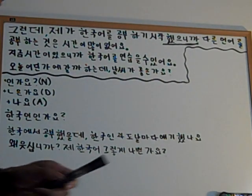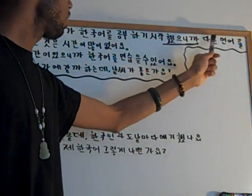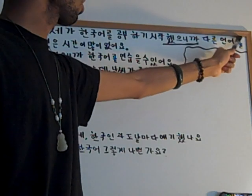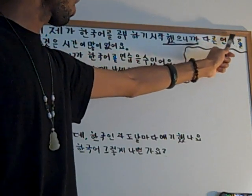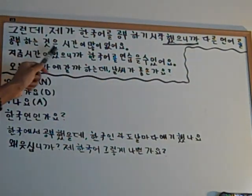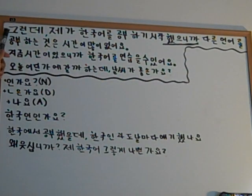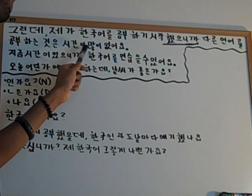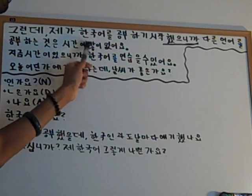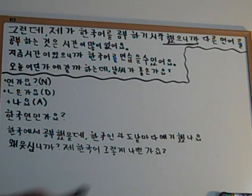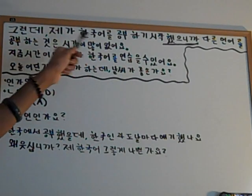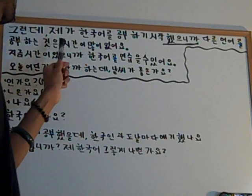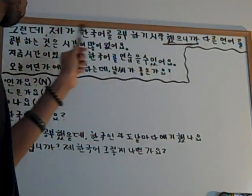So let's start: 다른 is 'other.' 다른 언어 — other languages. 를 is an object marker, marks the object, so 언어를. Then 공부하다 is 'to study' — so 'to study other languages.' 시간 is 'time,' and 없어요 is 'to not have.' So: I don't have a lot of time to study other languages because I just started learning Korean.